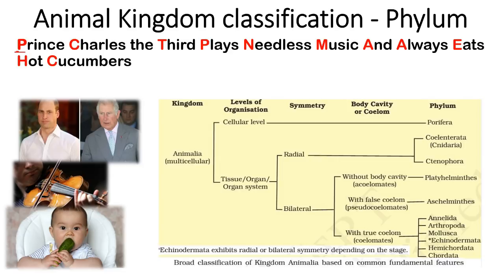P stands for Porifera. C stands for Cnidaria. T is for Ctenophora — it also begins with C but we use T to distinguish it. P is for Platyhelminthes. N is for Nematoda (or Aschelminthes). M is for Mollusca. A is for Annelida. Another A is for Arthropoda. E is for Echinodermata. H is for Hemichordata. And C is for Chordata.